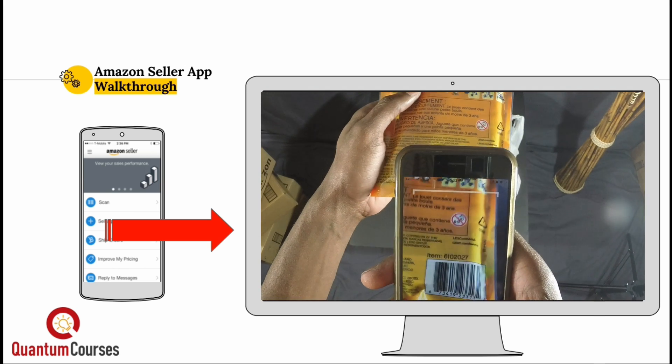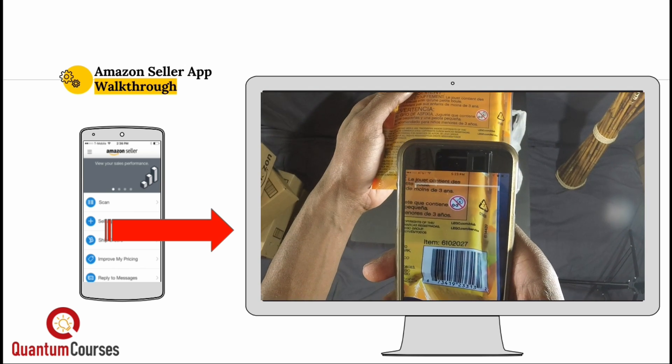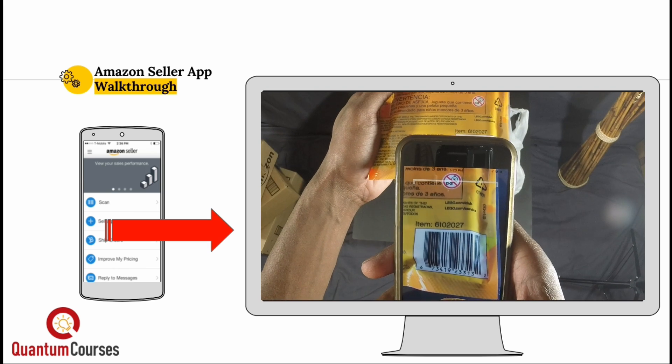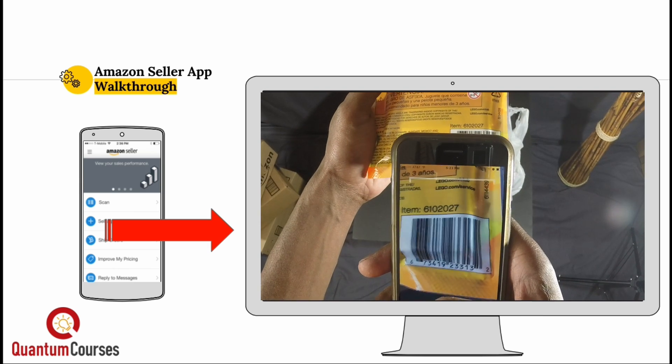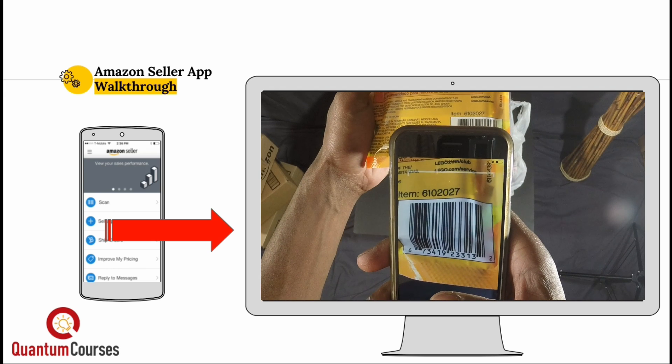Notice that you don't have to press any buttons. Just put the barcode in front of the app and the product automatically loads. At least that's what is supposed to happen.